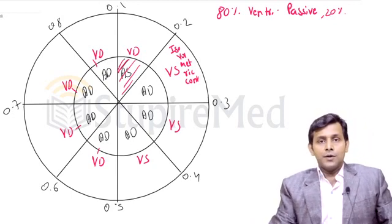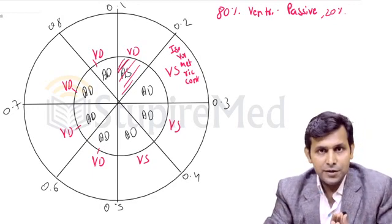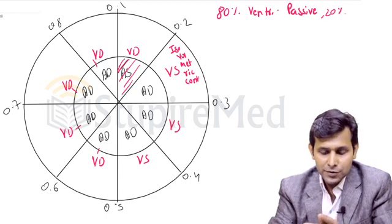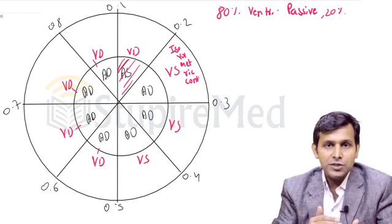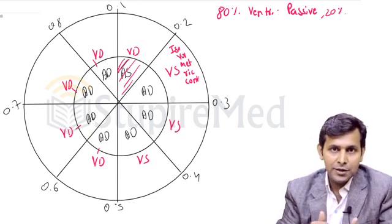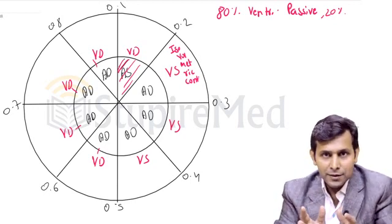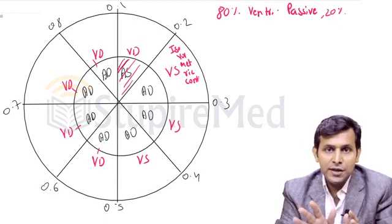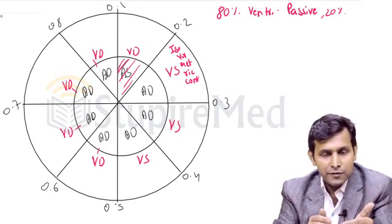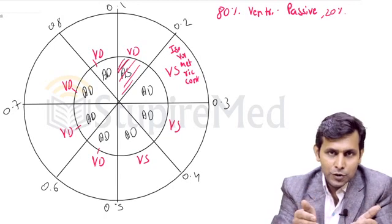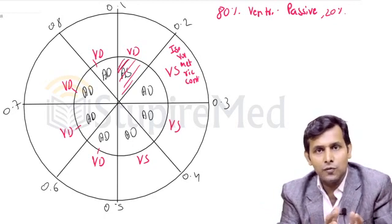What do we mean by isovolumetric contraction? When atrial systole is over, the blood from the atria goes to the ventricles. The moment the ventricle starts contracting, the pressure in the ventricle increases and this pressure causes blood to move back. This blood trying to move back closes the AV valve. So the AV valve is closed, the aortic valve has not yet opened, and the ventricles are contracting as a closed chamber — this is called isovolumetric contraction.